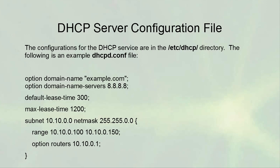The subnet section configures address distribution. In this example the subnet is 10.10.0.0/16, and addresses are handed out only in the range 10.10.0.100 through 10.10.0.150 — only 51 addresses. The default gateway is set to 10.10.0.1, which is the router.